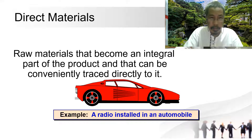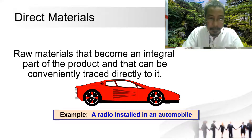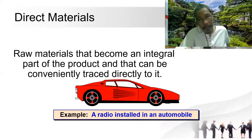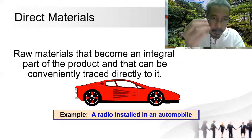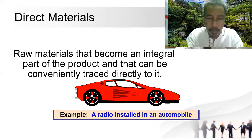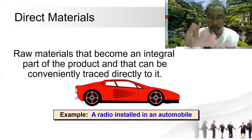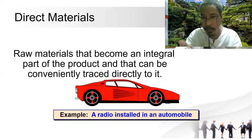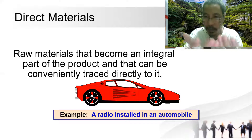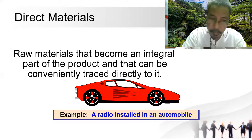Number one is direct materials. These are the materials that become an integral part of the product and that can be conveniently traced directly to it — integral part means it is a part and portion of the assembly. For example, you have a gift — the wrapper is not an integral part of the product, so wrapping paper is not a direct material; it is an overhead.